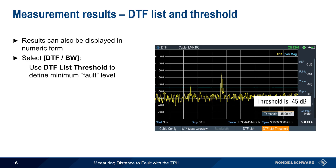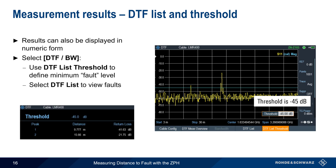Distance to fault measurements can also be displayed in numeric or tabular form. This is done by using the DTF Bandwidth hard key. First, use DTF Threshold to define the minimum level, in dB, that should be considered a fault. In this case we've chosen minus 45 dB, and this threshold is shown on the display as a blue horizontal line. If DTF List is then selected, a table showing peak number, distance, and return loss is displayed. Here we see two peaks: one at 9.8 meters with a return loss of about 42 dB, and the second at 15.7 meters with a return loss of about 22 dB.